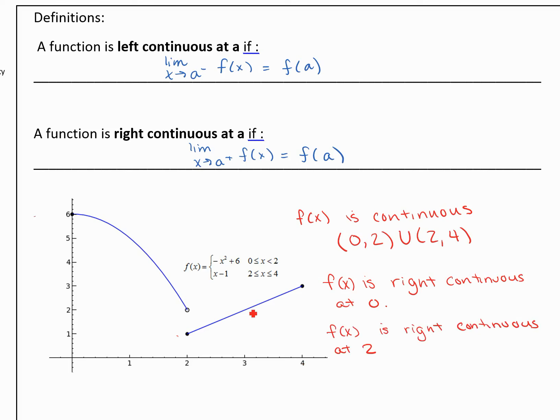And then at 4 we don't have a right-handed limit, but our left-handed limit is equal to the function value of the closed dot there. So we could say f(x) is left continuous at 4.